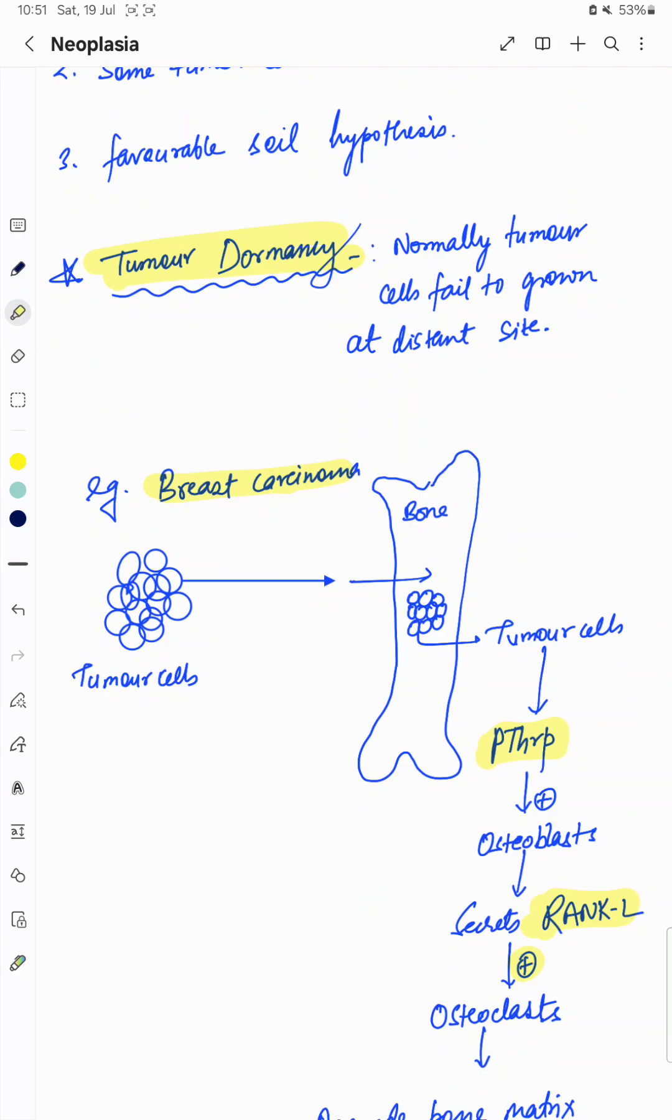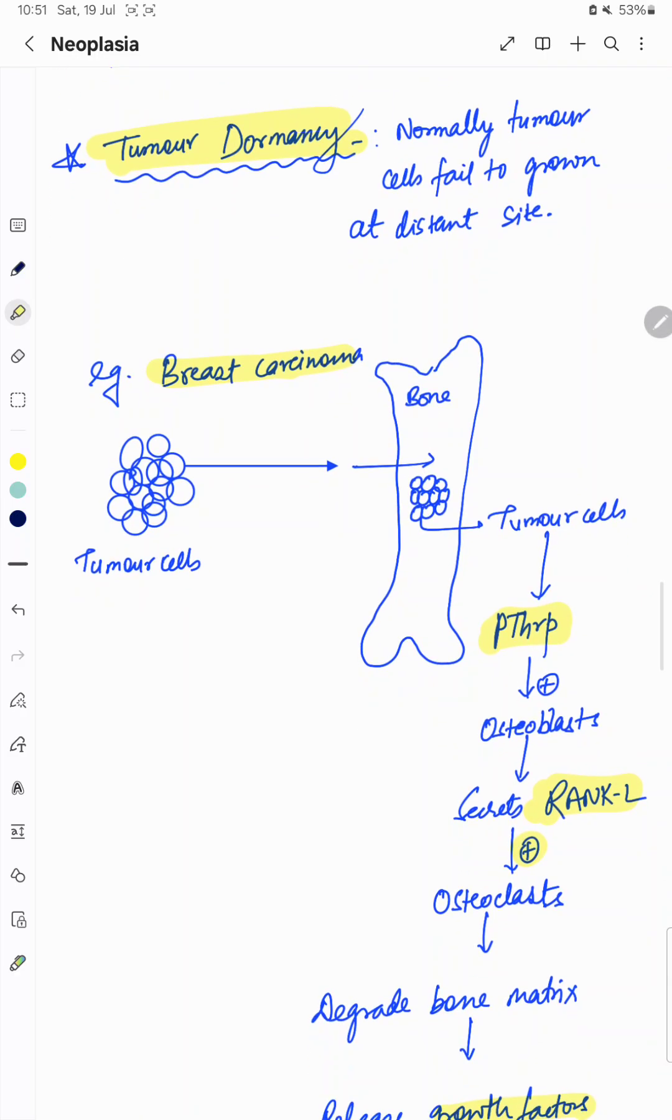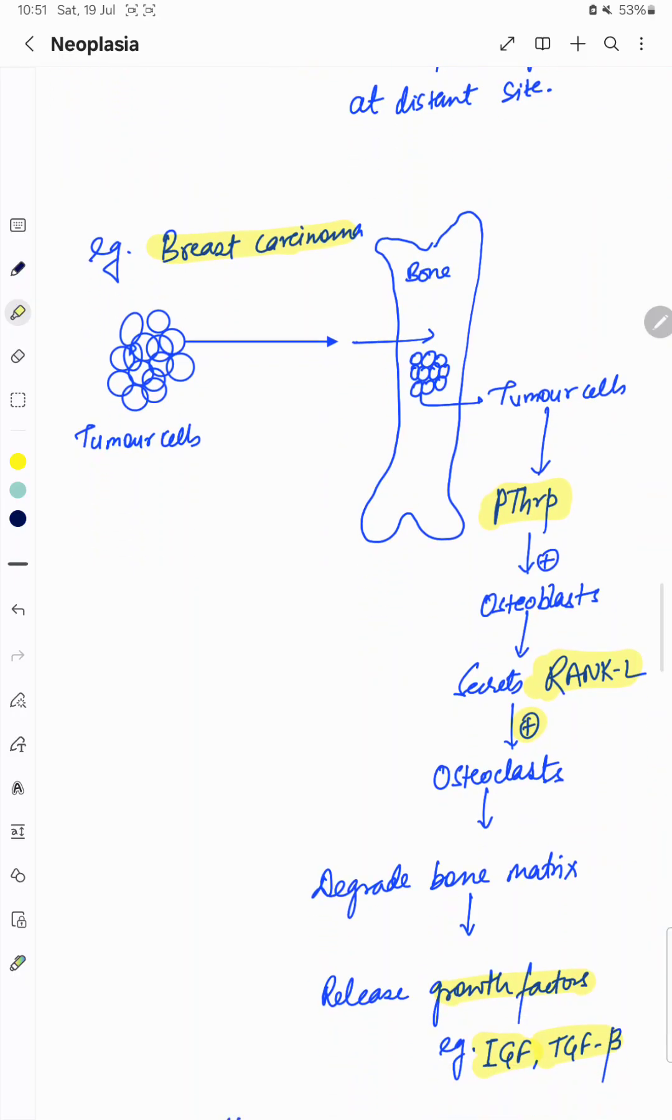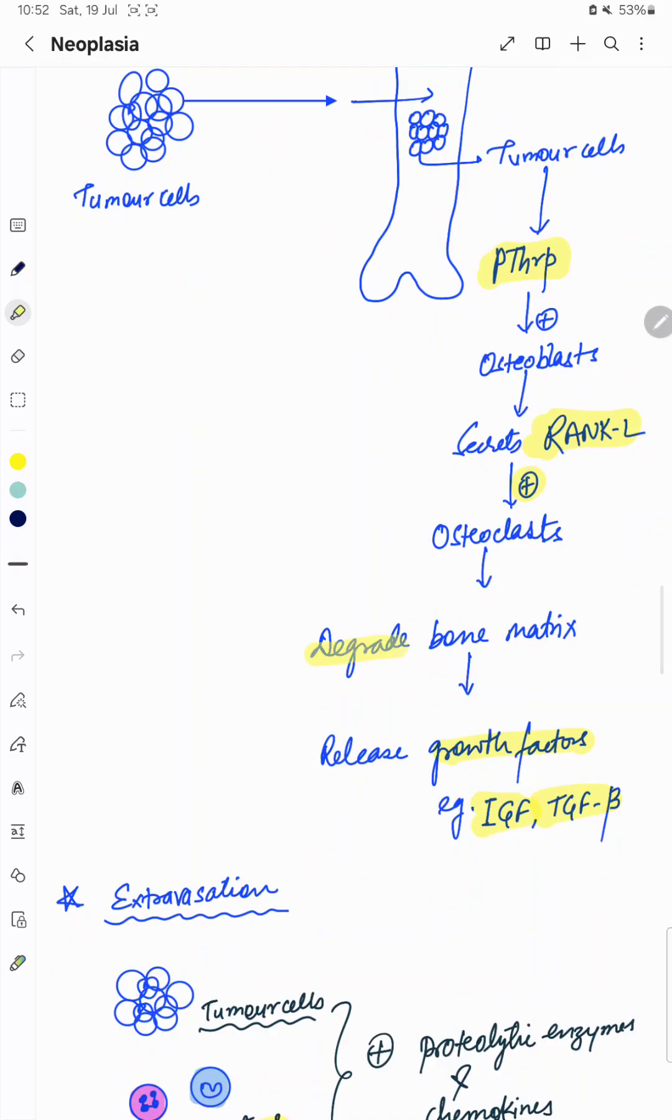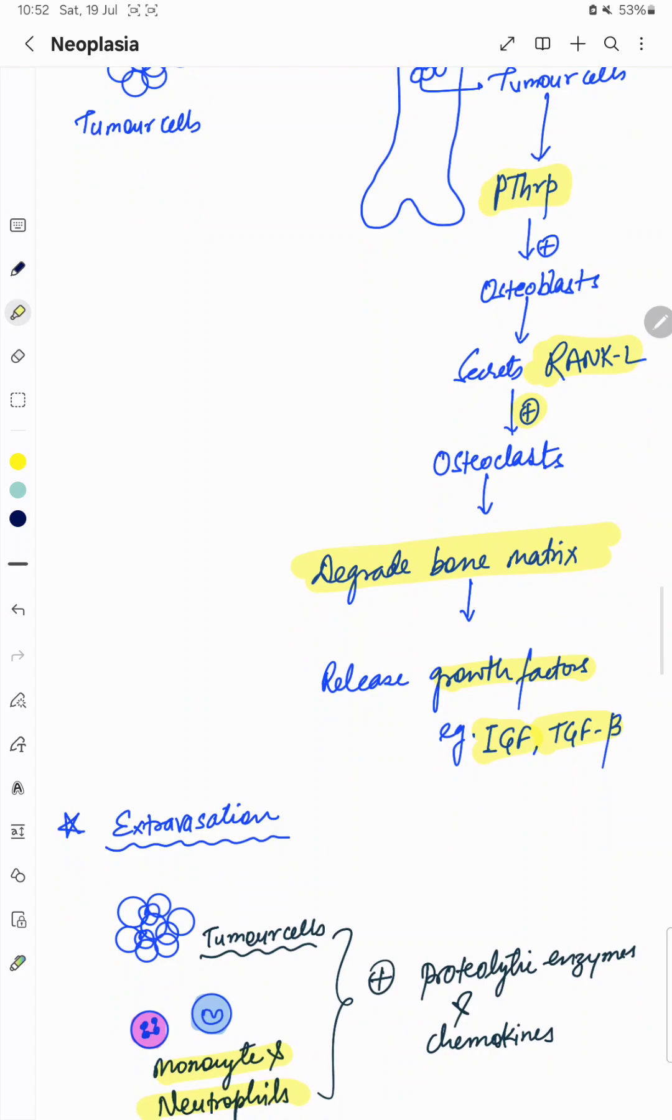In breast cancer, tumors reach the bone where they secrete parathyroid-related protein, parathyroid hormone-related protein which activates the osteoblast. Osteoblast secretes RANK ligand which activates osteoclast activity. Osteoclast over-activation will result in degradation of bone matrix and releasing growth factors like insulin-like growth factor and TGF-beta which help these cancer cells to settle and grow at these distant sites.